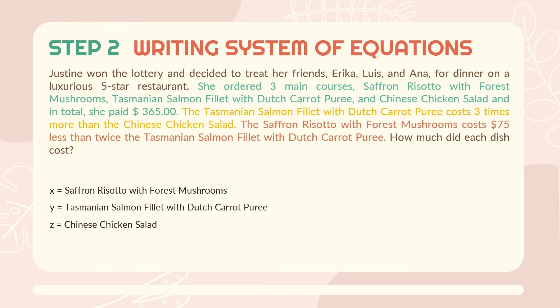Now that we have our variables, let's write our equations. The word problem says she ordered three main courses — saffron risotto with forest mushrooms (X), Tasmanian salmon fillet with Dutch carrot puree (Y), and Chinese chicken salad (Z) — and in total she paid $365. So the first equation is the sum of the three courses: X + Y + Z = 365.